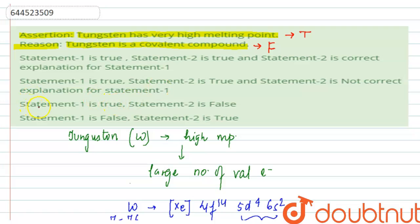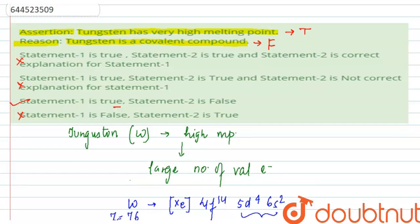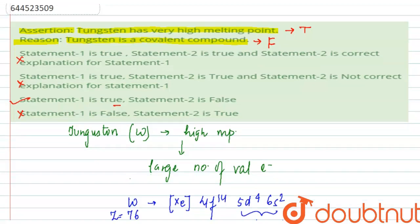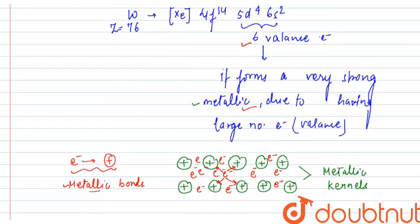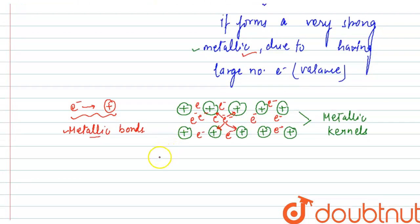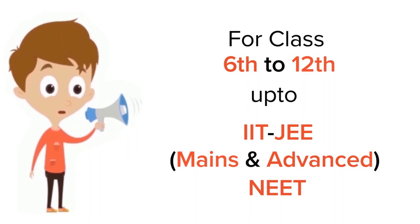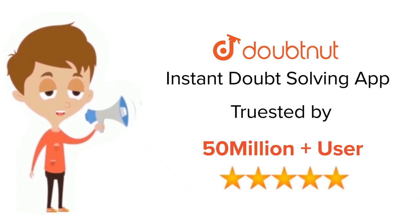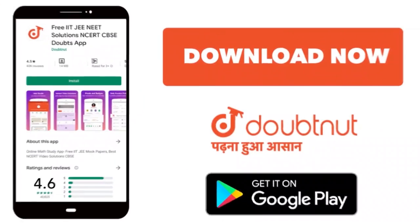So statement one is true, statement two is false. So option three is correct, and the rest are incorrect. This is how we can understand why the melting point of tungsten is high, and we can solve this question based on that. I hope this is clear to you. Thank you! For class 6 to 12, IIT-JEE, and NEET level, trusted by more than 5 crore students, download Doubtnut today.